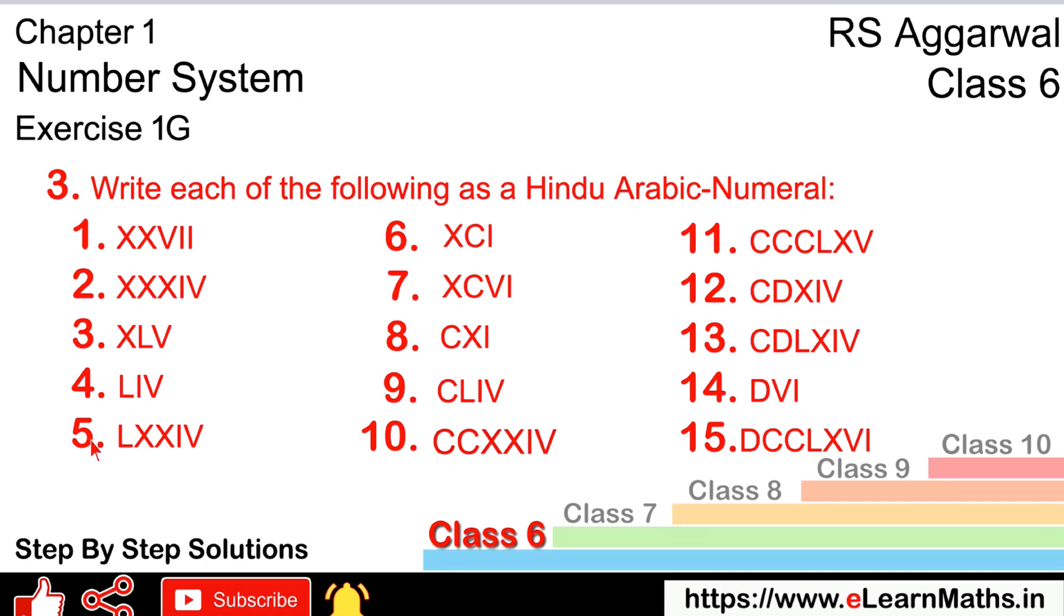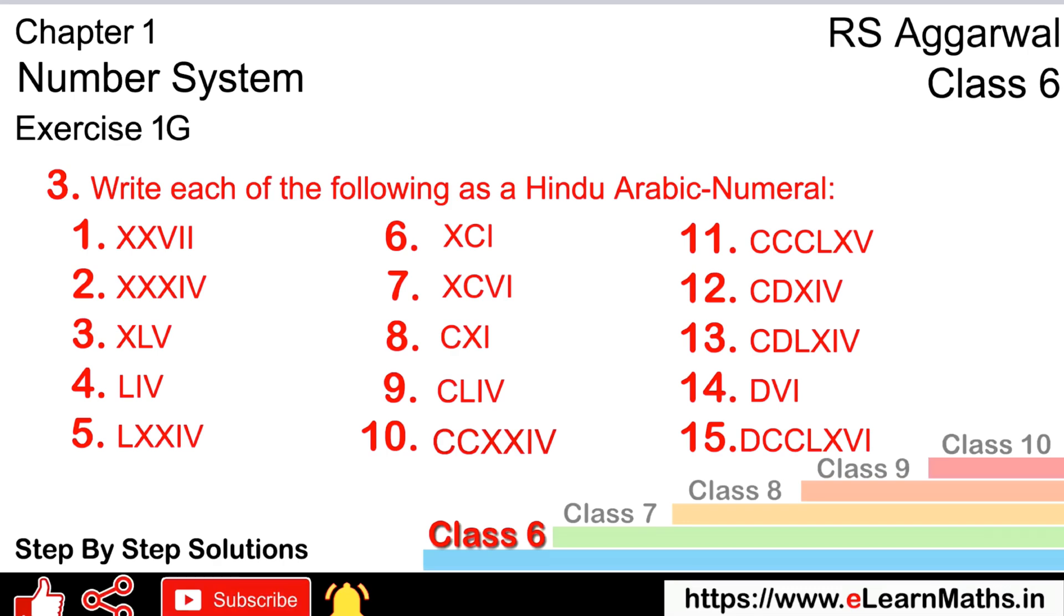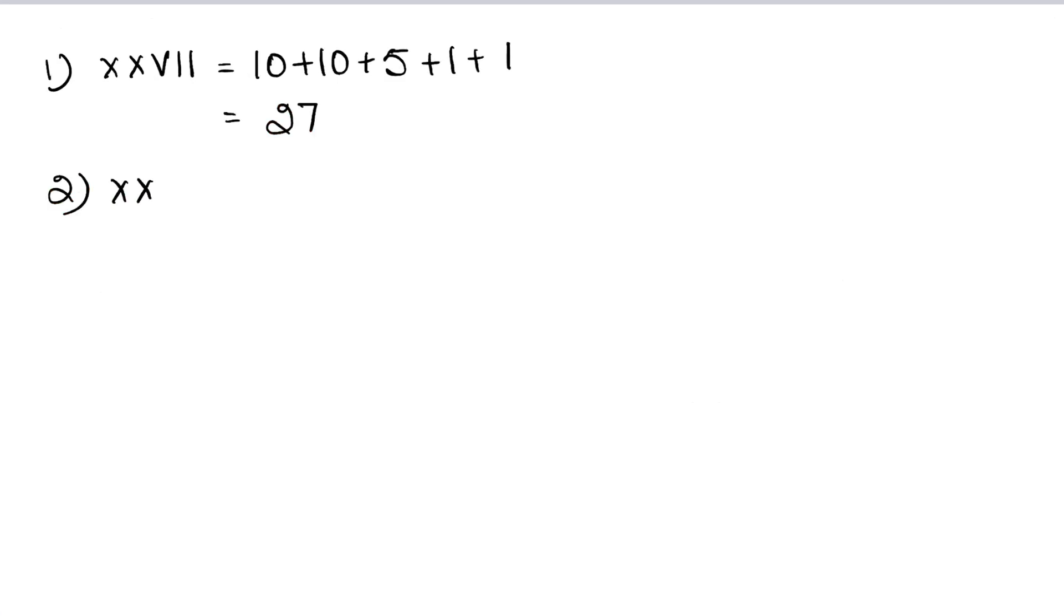First figure. First is XXVII. So X is 10, 10 plus 10, V is 5, and I is 1. So 10 plus 10 plus 5 plus 1 plus 1, that is 27. Second part, XXXIV. 10 plus 10 plus 10, plus 5 minus 1, so 30 plus 4, that is 34.